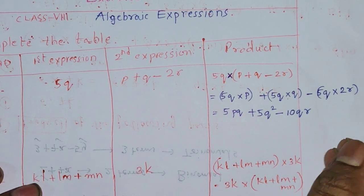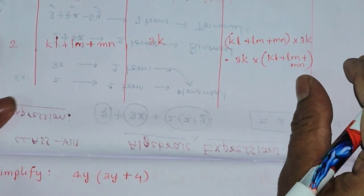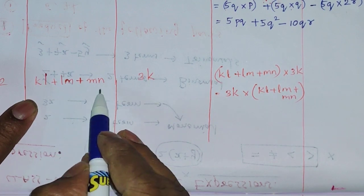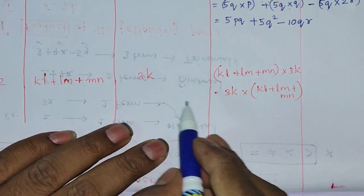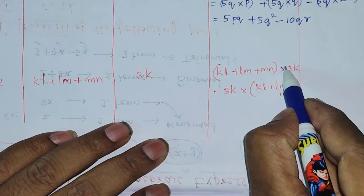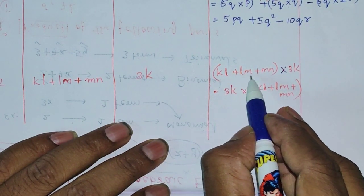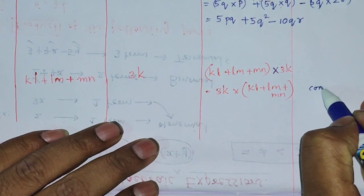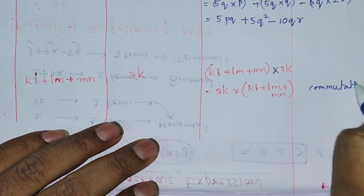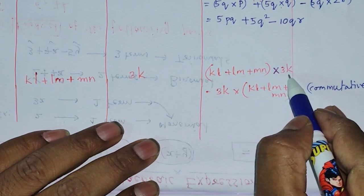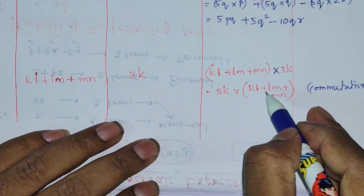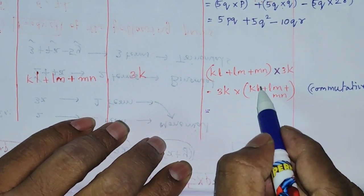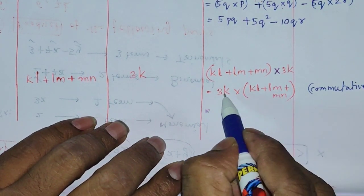Let's go to another problem. Two expressions are given: one is kl plus lm plus mn, and the second expression is 3k. Since they are asking for the product, I have written kl plus lm plus mn into 3k. I am using the commutative property, so I have rewritten it as 3k into kl plus lm plus mn.